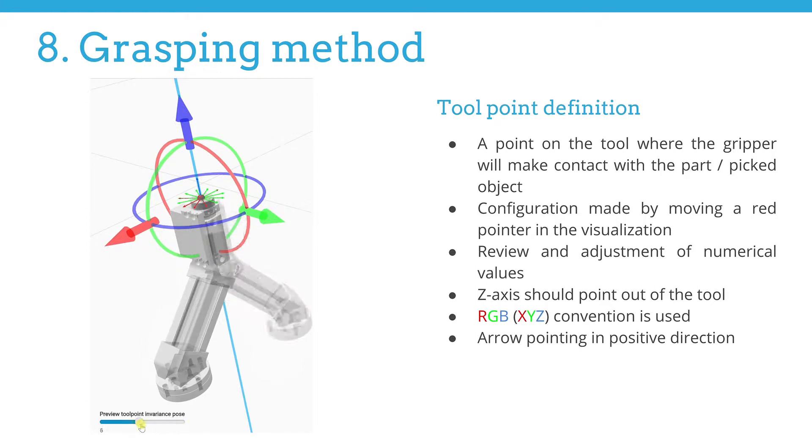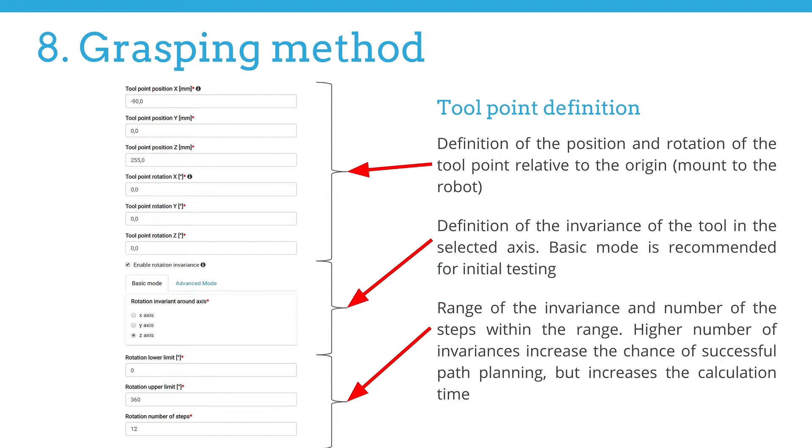In terms of general remarks, the z-axis should point out of the tool. We are using a so-called RGB convention for coordinate system axes. Red represents the x-axis, green represents the y-axis, and blue represents the z-axis in the visualization. The arrow of each axis is pointing in a positive direction.